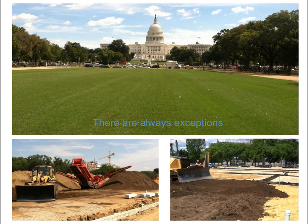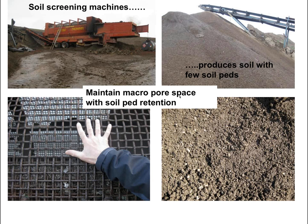There are always exceptions. Turf is one big exception — for high-impact turf such as the National Mall, we want to get up to about 70% to 80% coarse sand in the mix to do what that industry has developed.